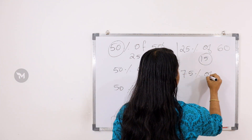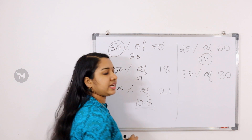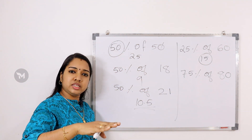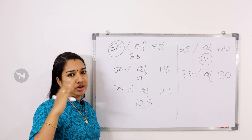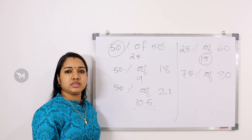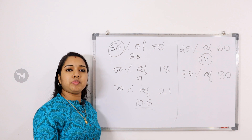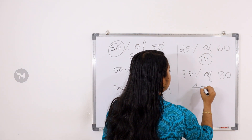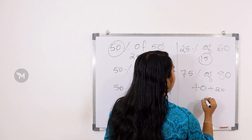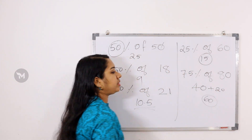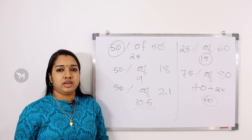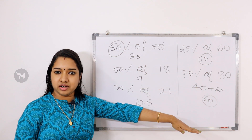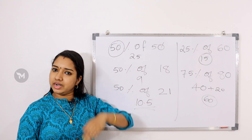With 25%, do it in half twice. If you have 75%, use this approach: 75% of 80 — what is 75%? It is 50% plus 25%. So 50% of 80 is 40, and 25% of 80 is 20. Add 40 and 20 to get 60. That is 75% of 80.